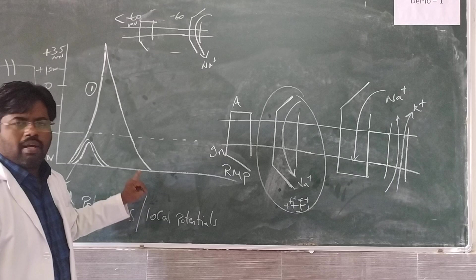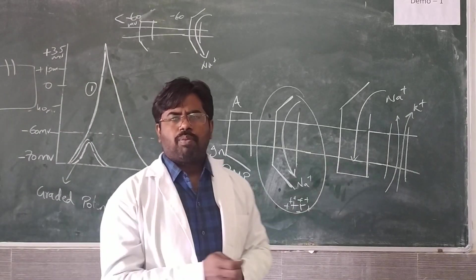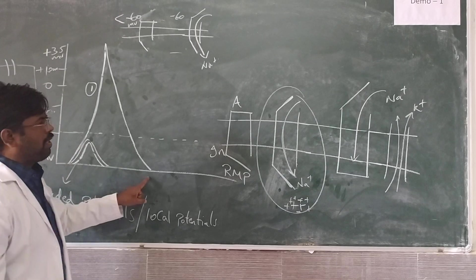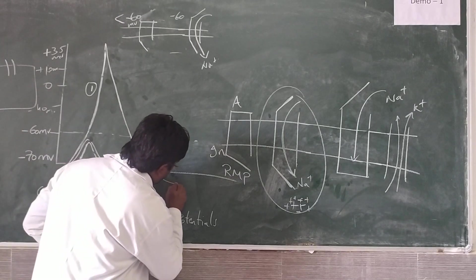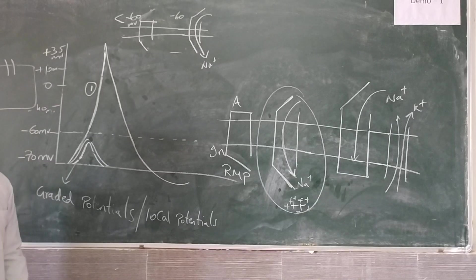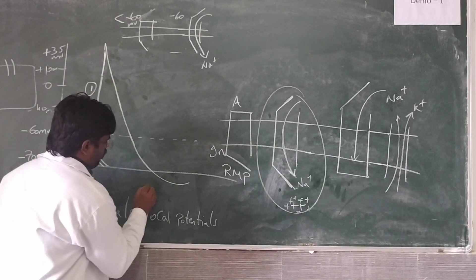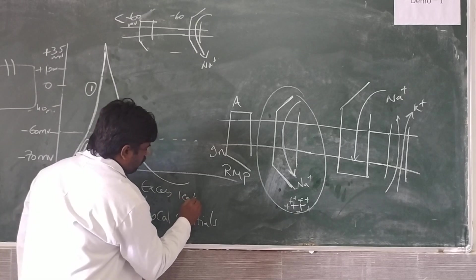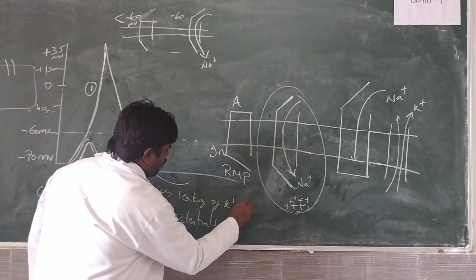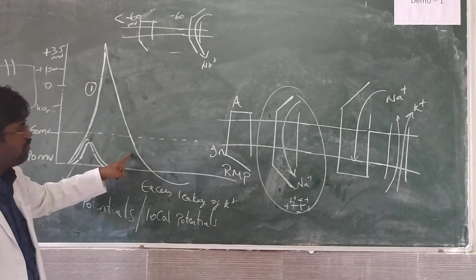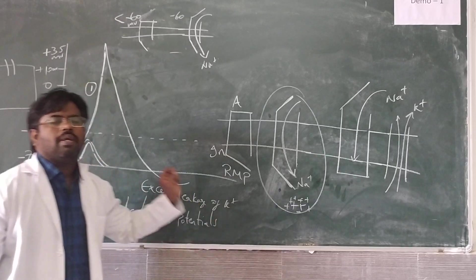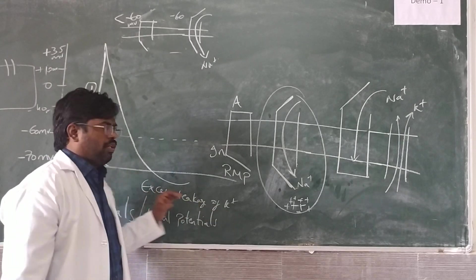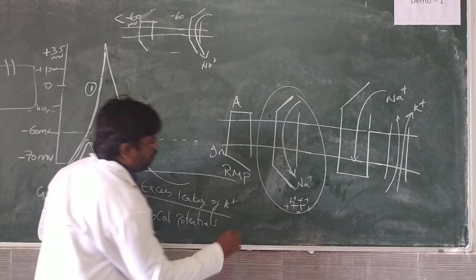It reaches up to the level of resting membrane potential. When it reaches resting membrane potential, still more potassium ions will leak. Even when it reaches the resting membrane potential, it further undergoes negativity because of excess leakage of potassium. This part is due to excess leakage of potassium ions, and the leaky channels are still kept open, leading to excess leakage of potassium.